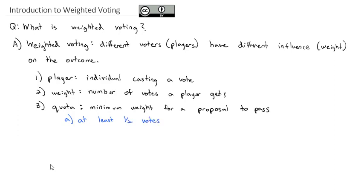The quota is the minimum weight, or number of votes, for a proposal to pass. The quota must be at least half of the votes — otherwise you could have quota met both for and against a proposal. In addition, it can be no more than the total number of votes; otherwise you would never be able to reach that quota.